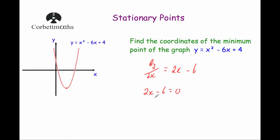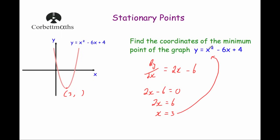Now let's solve this equation. Add 6 to both sides: 2x equals 6, and dividing by 2 we get x equals 3. So the x-coordinate of this point is equal to 3. We just need to find the y-coordinate. We know that x is equal to 3, so we'll substitute that back into our original equation y equals x squared minus 6x plus 4.